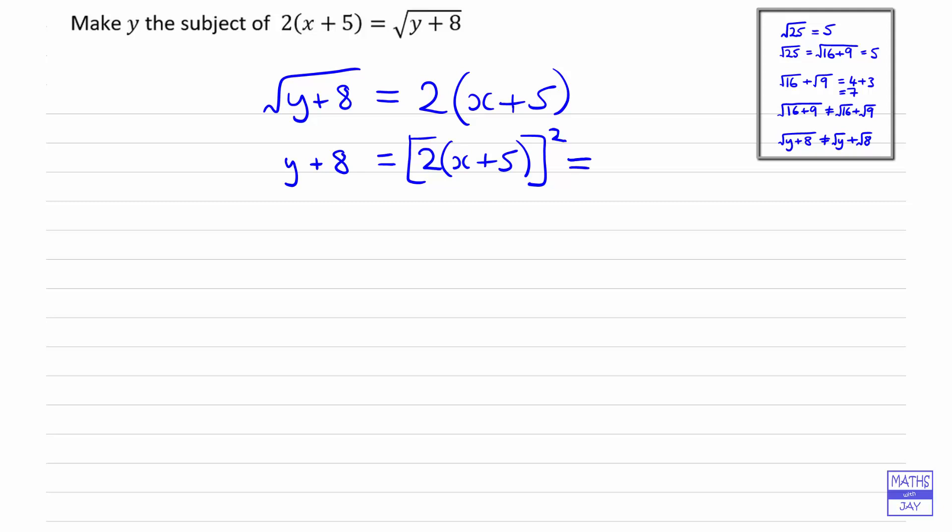What we get on the right hand side is 2 squared is 4, and then we're going to be squaring x plus 5, so that's going to be 4 times x plus 5 squared, which will be x squared, 2 lots of 5x so that will be 10x, and 5 times 5 is 25.